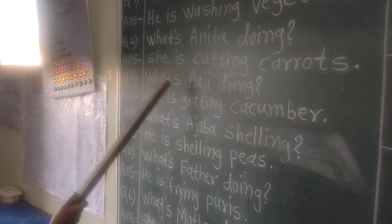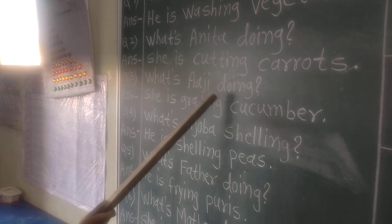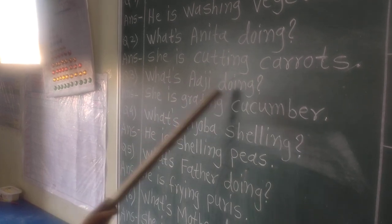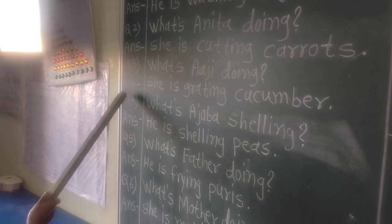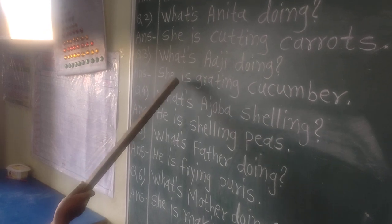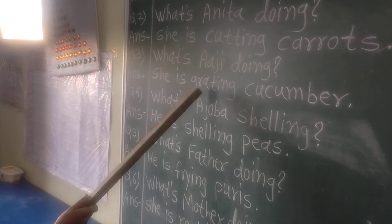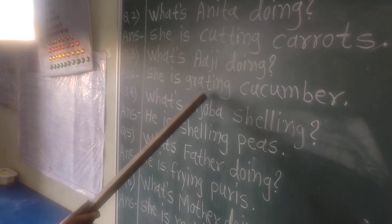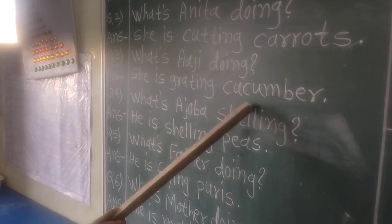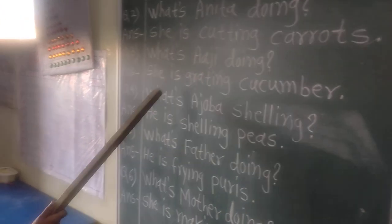Question 3. What's Anil doing? Answer. She is cutting cucumber.